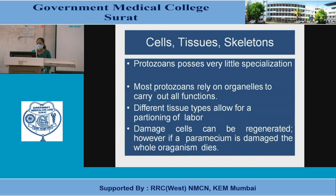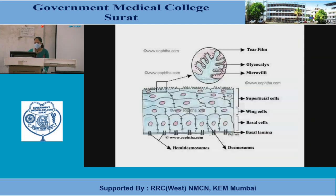Protozoans possess very little specialization and rely on organelles to carry out all functions. Differentiated tissue types allow for a partitioning of labor. Damaged cells can be regenerated; however, if a paramecium is damaged, the whole organism dies. Cell layers include the glycocalyx, microvilli, superficial cells, wing cells, basal cells, basal lamina, and desmosomes.